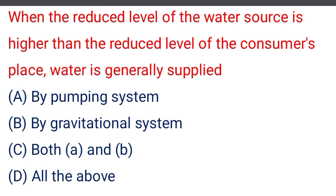First question: when the reduced level of the water source is higher than the reduced level of the consumer's place, water is generally supplied — option A by pumping system, option B by gravitational system, option C both A and B, option D all of the above. The correct answer is option B, by the gravitational system, because the consumer's place is lower than the water source.